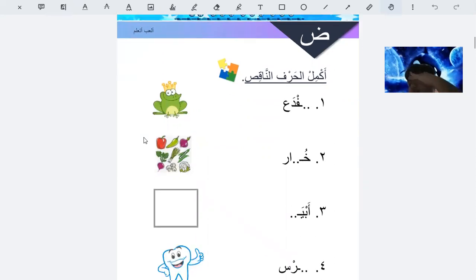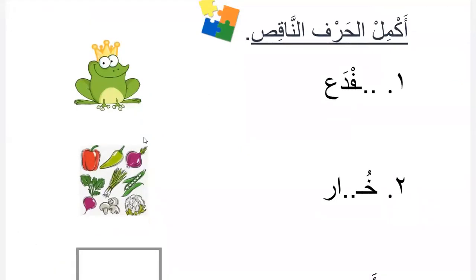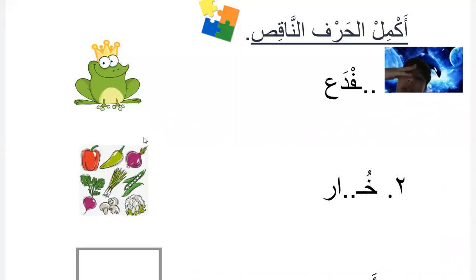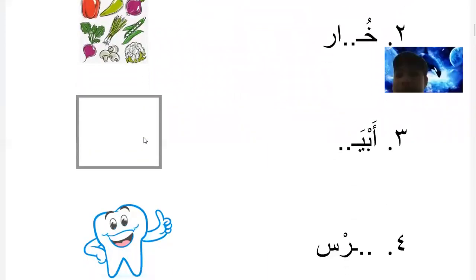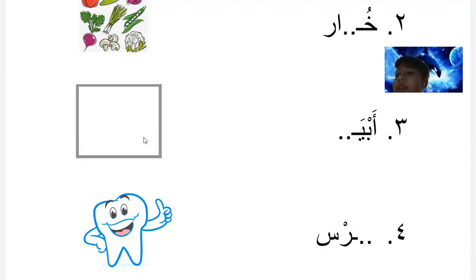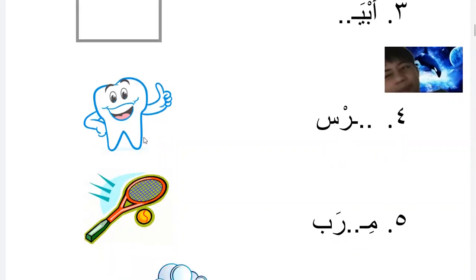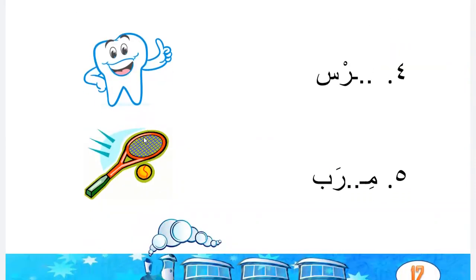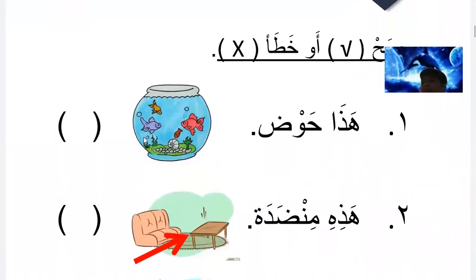Dirs. Akmili l-harf annaqis - complete the missing letter. D-F-dah - good. Khodar - good. Then abyad, abyad - good. The tooth is dirs - good. The racket is midrab, midrab. Is that correct or wrong?